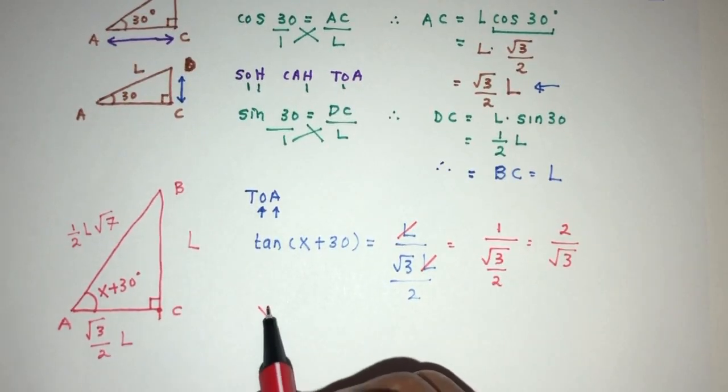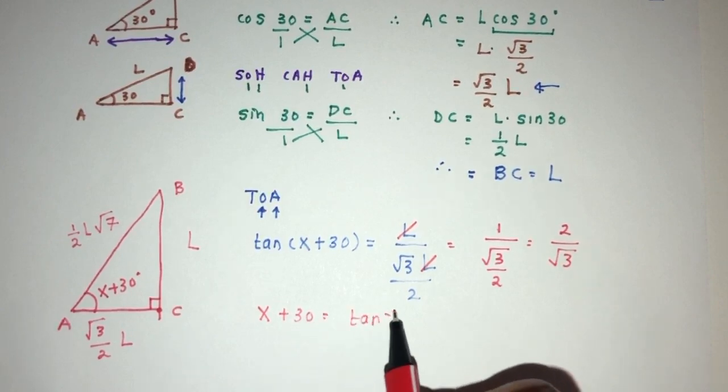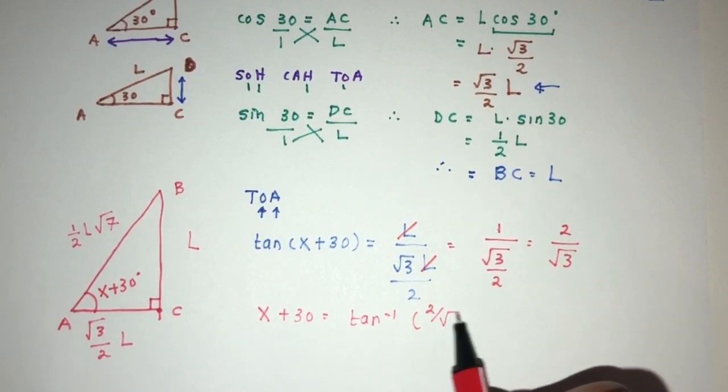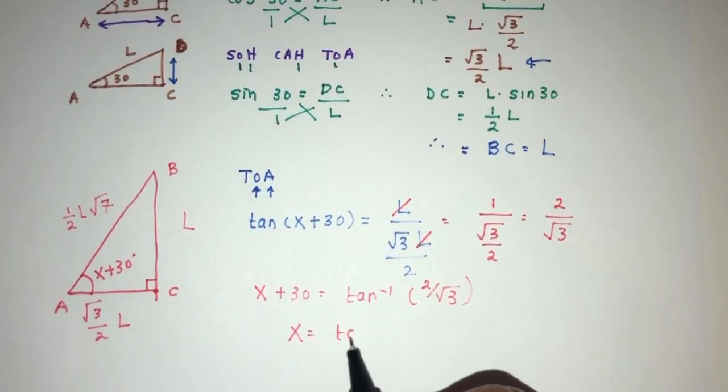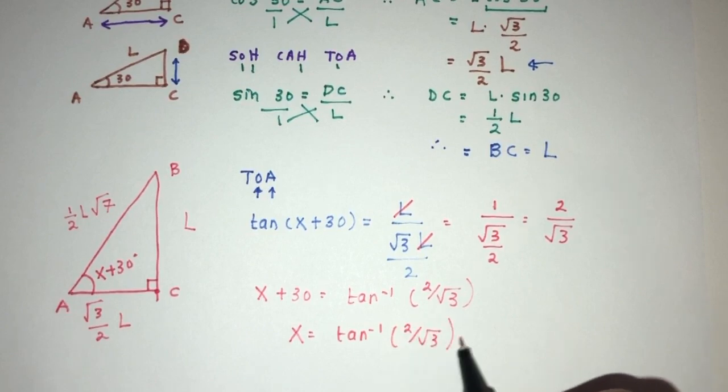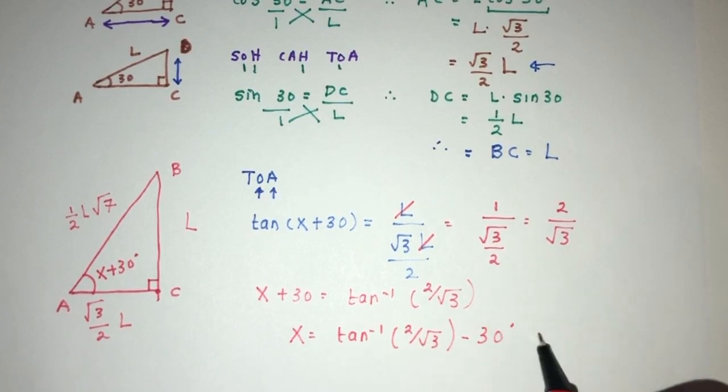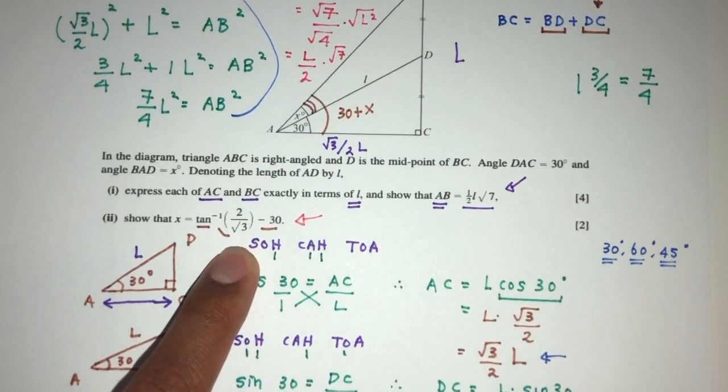Finally, x plus 30 will be simply tan inverse of 2 over root 3. And x will be tan inverse of 2 over root 3 minus 30. And that will be your answer, exactly shown as required for part two of the question.